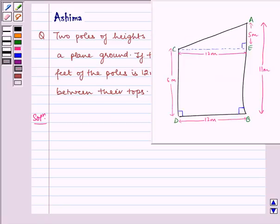Now let us see the diagram. Here we have two poles. Let AB be the pole of height 11m and let CD be the pole of height 6m. The distance between the feet of the two poles is 12m, that is, DB is equal to 12m.